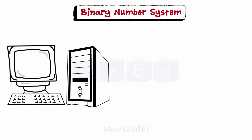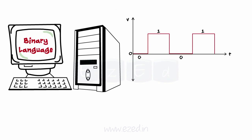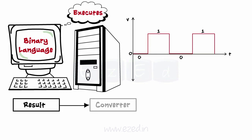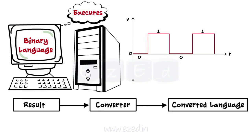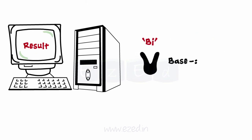Starting with the binary number system — a computer only understands digital language. When we give any command to the computer, it first converts it to the digital language, commonly known as binary language, and then executes the command. The result generated is first converted back to our language by the computer and then displayed. Binary means 2, hence the base used in the binary number system is 2, and it has only two symbols or digits: 0 or 1.